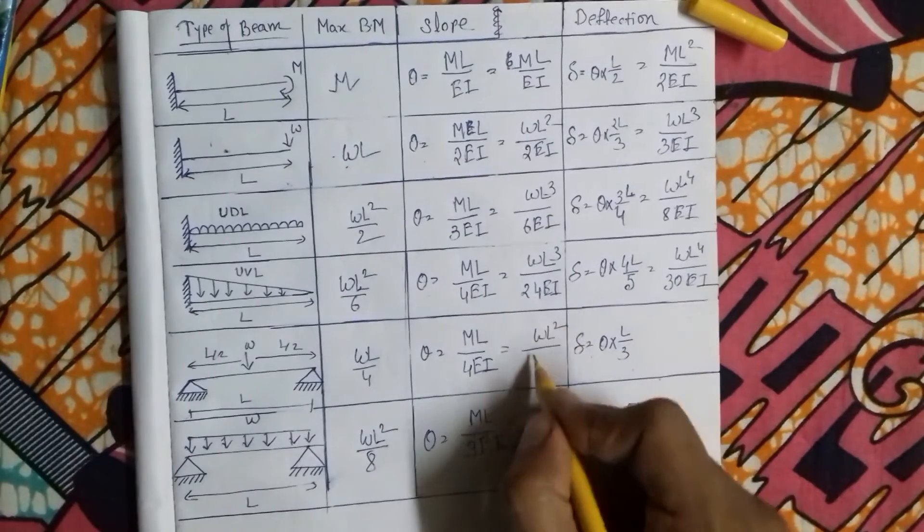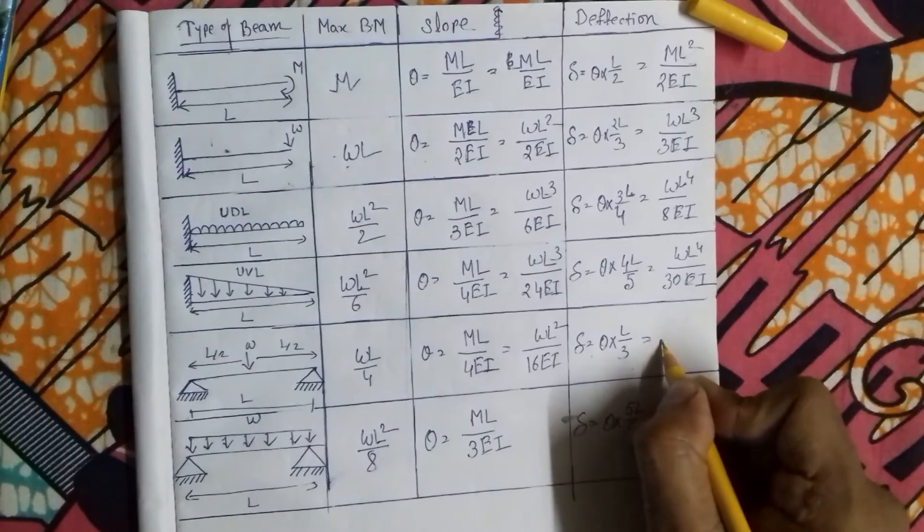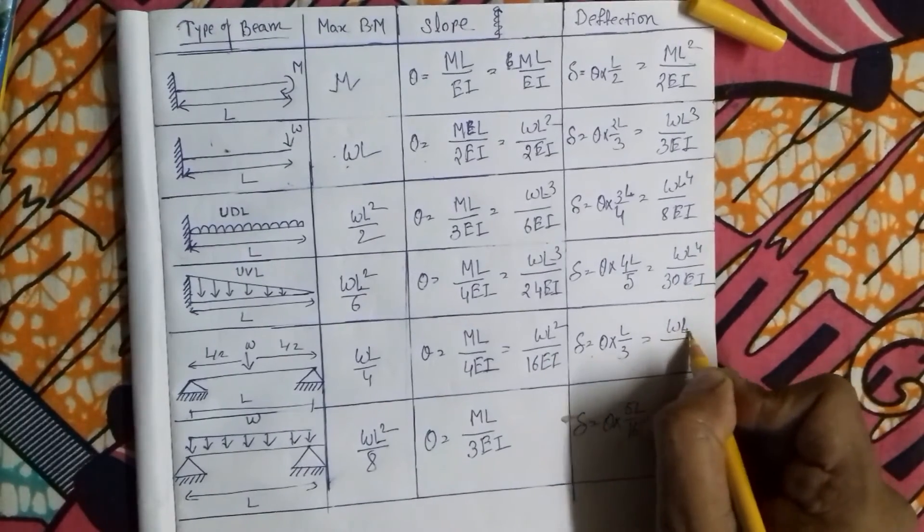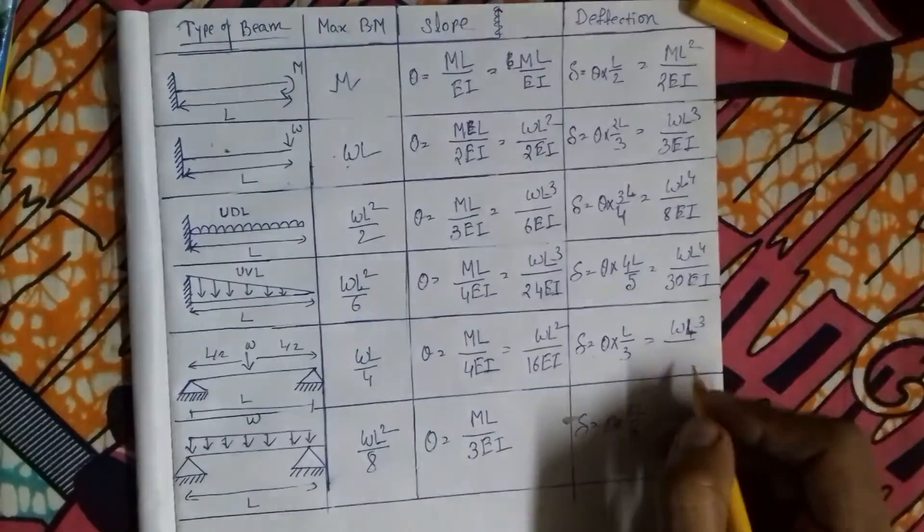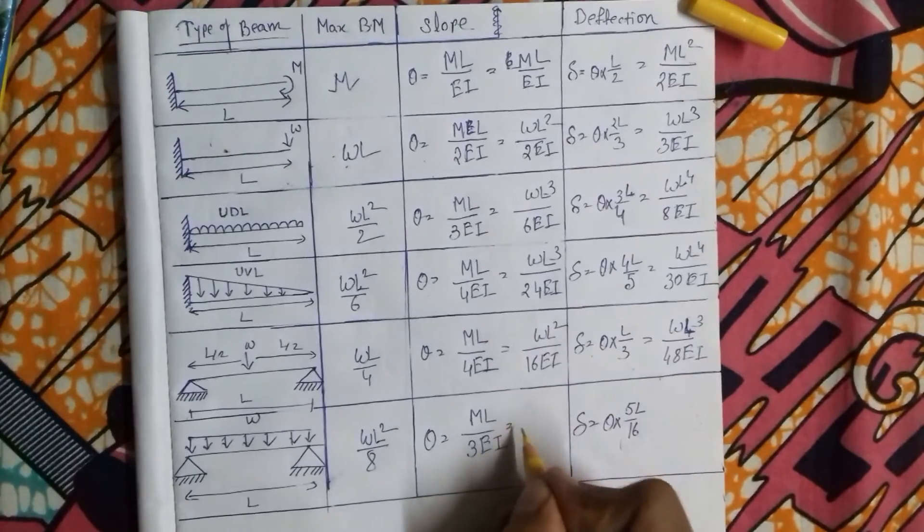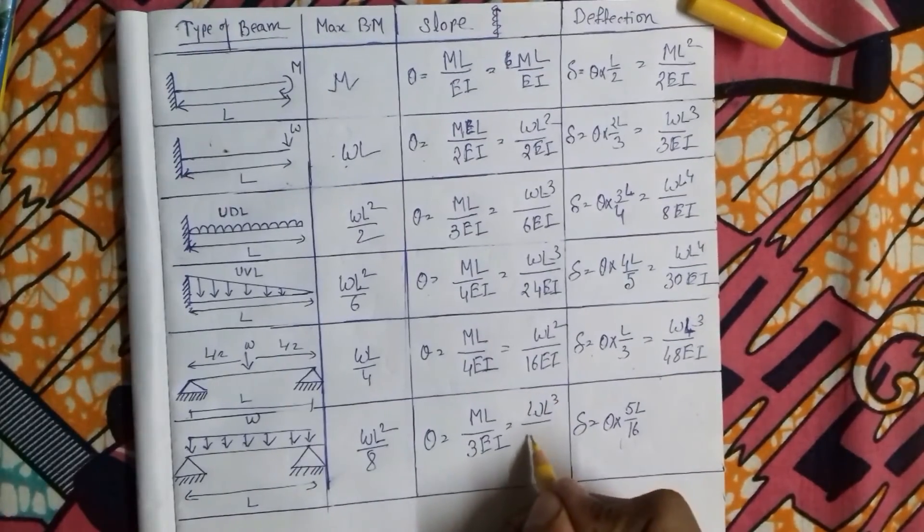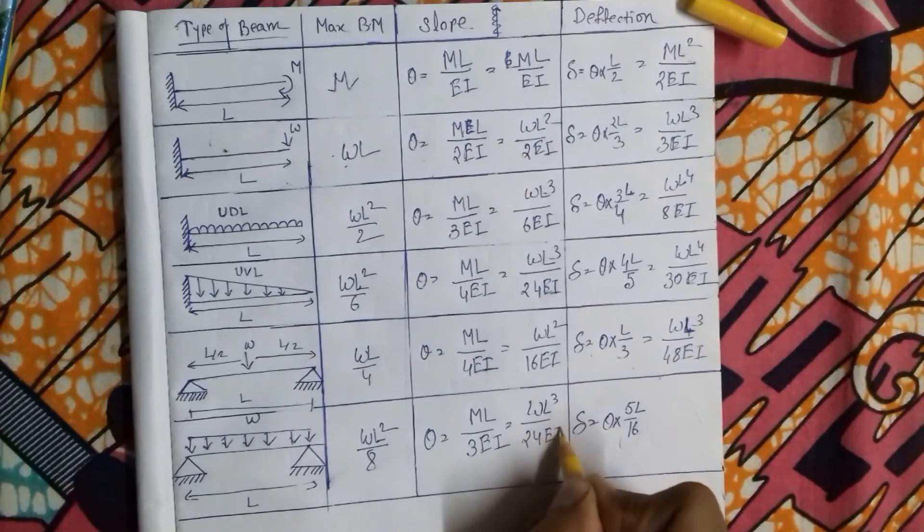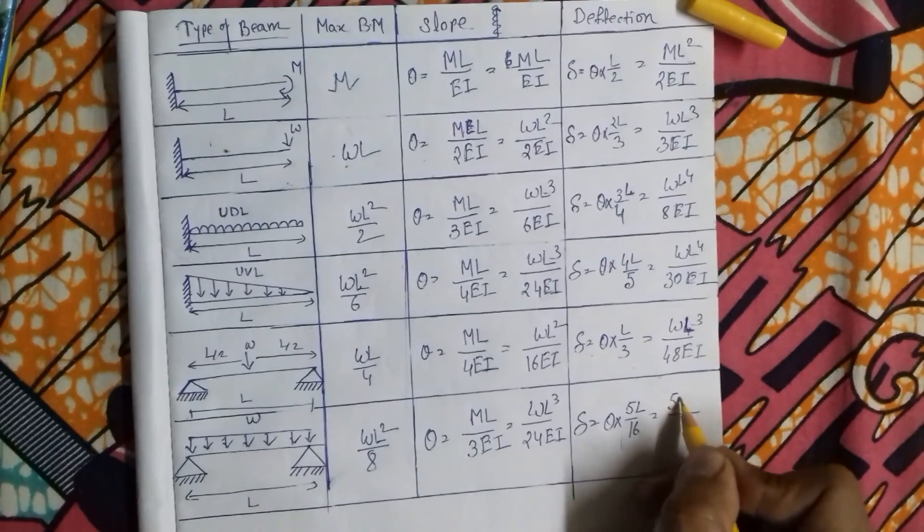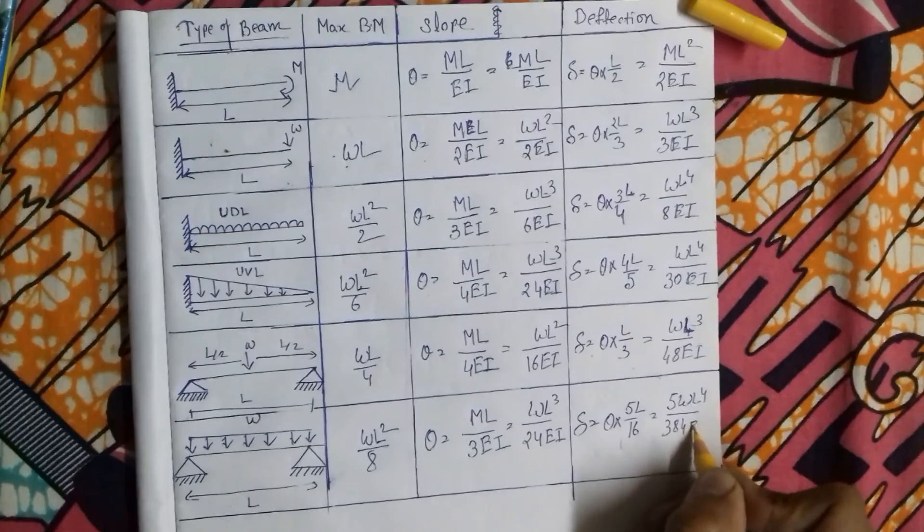WL² by 16EI, WL³ by 48EI, WL³ by 24EI, 5WL to the power 4 by 384EI.